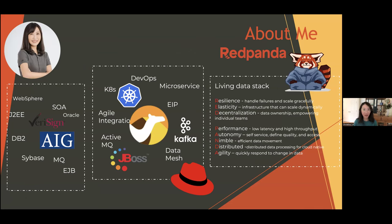My previous experience was very heavily on Java. I did a bunch of SOA work, a lot of Java programming, and I have a lot of experience with IBM messaging queues and WebSphere. Then I moved on to doing something more open source because I like the community. I started using JBoss and got introduced to Camel, did a bunch of work on Camel. When integrations require asynchronous work, and when Kafka first started, that's when I started working with Kafka — and now I'm with Red Panda, building that live data stack where everything moves really fast.